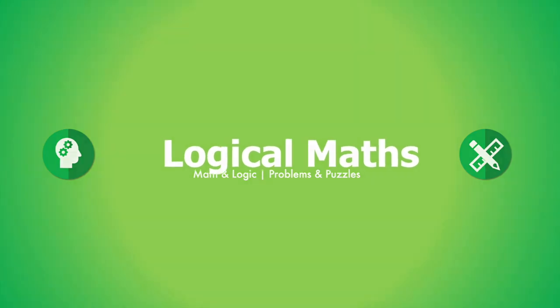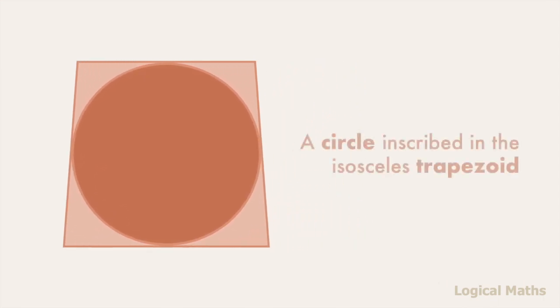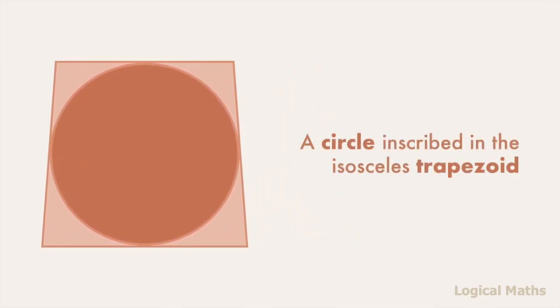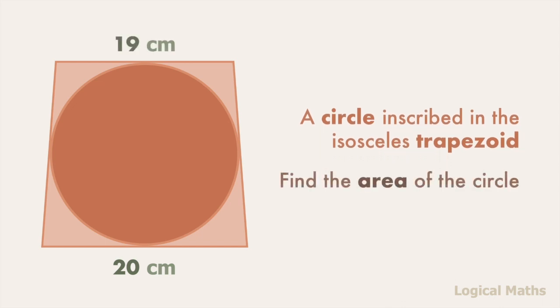Hey guys! You are watching a new video on the LogicalMesh channel. A circle is inscribed in an isosceles trapezoid. The length of the bottom base is 20 cm and the length of the top base is 19 cm. Find the area of the circle. Pause the video if you want to figure it out for yourself, and then keep on watching for a solution.